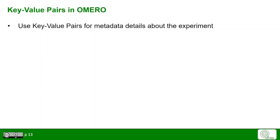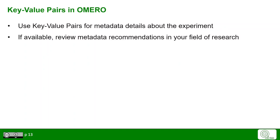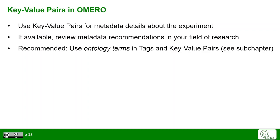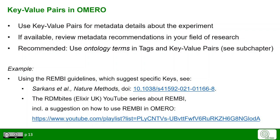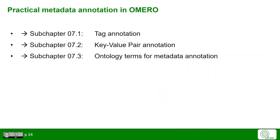As recommended, use key-value pairs for metadata details about the experiment. If available, review metadata recommendations in your research field. We recommend using ontology terms in tags and key-value pairs, which we will focus on in a later chapter. Examples include the REMBI guidelines, and you can also find examples online, for instance in the YouTube video series RDM Bytes by Alexia Uck. We will get into more detail first on tag annotation in OMERO, then key-value pair annotation in OMERO, and then on the use of ontology terms for metadata annotation.